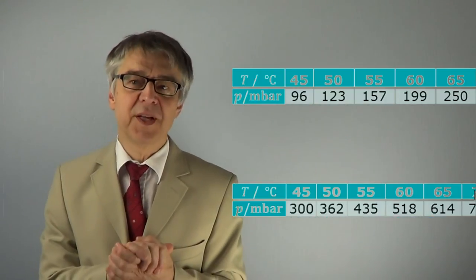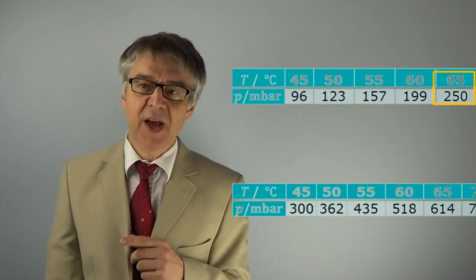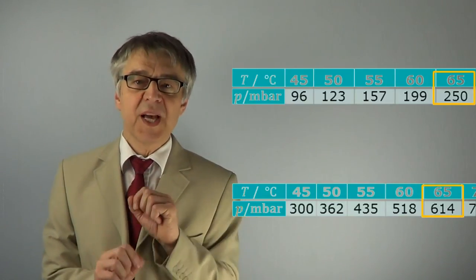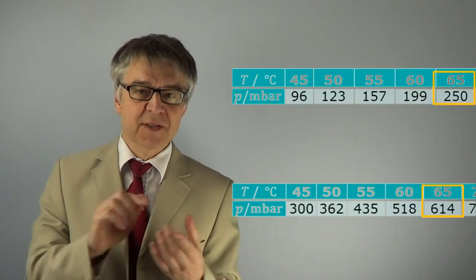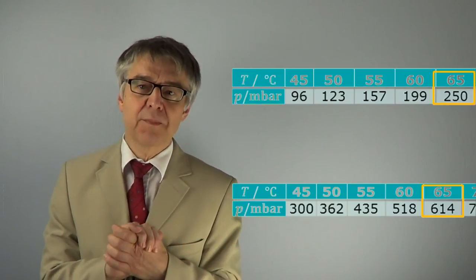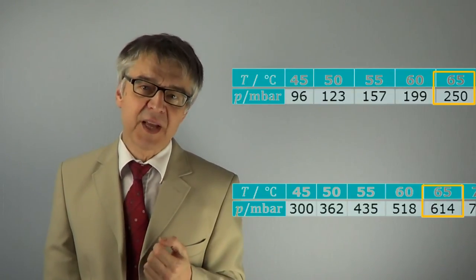For example, a mixture of water and cyclohexane won't yet boil at 65 degrees Celsius, for the sum of the vapor pressures is only about 864 millibars at that temperature.